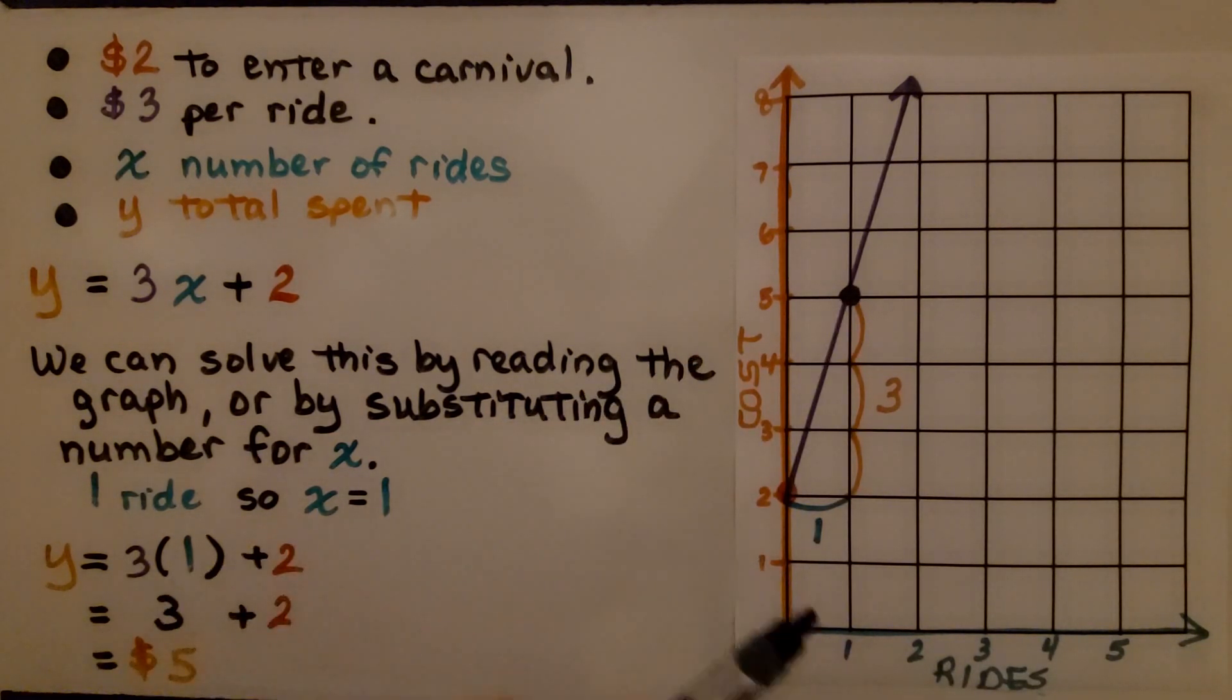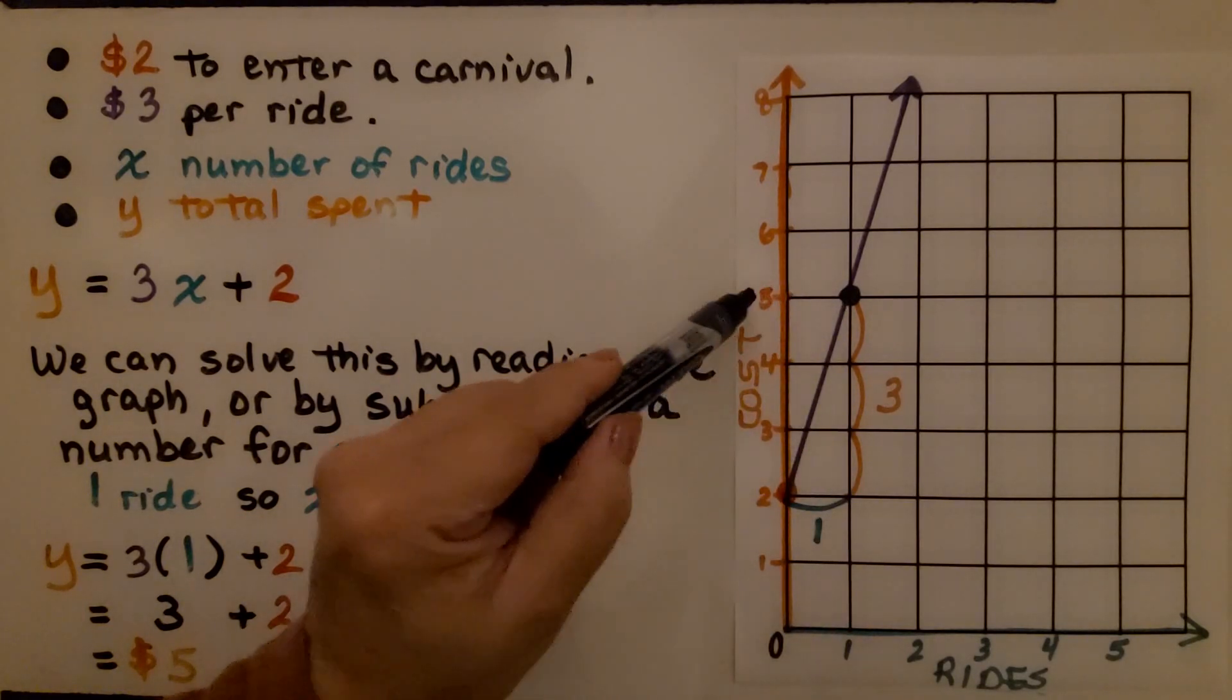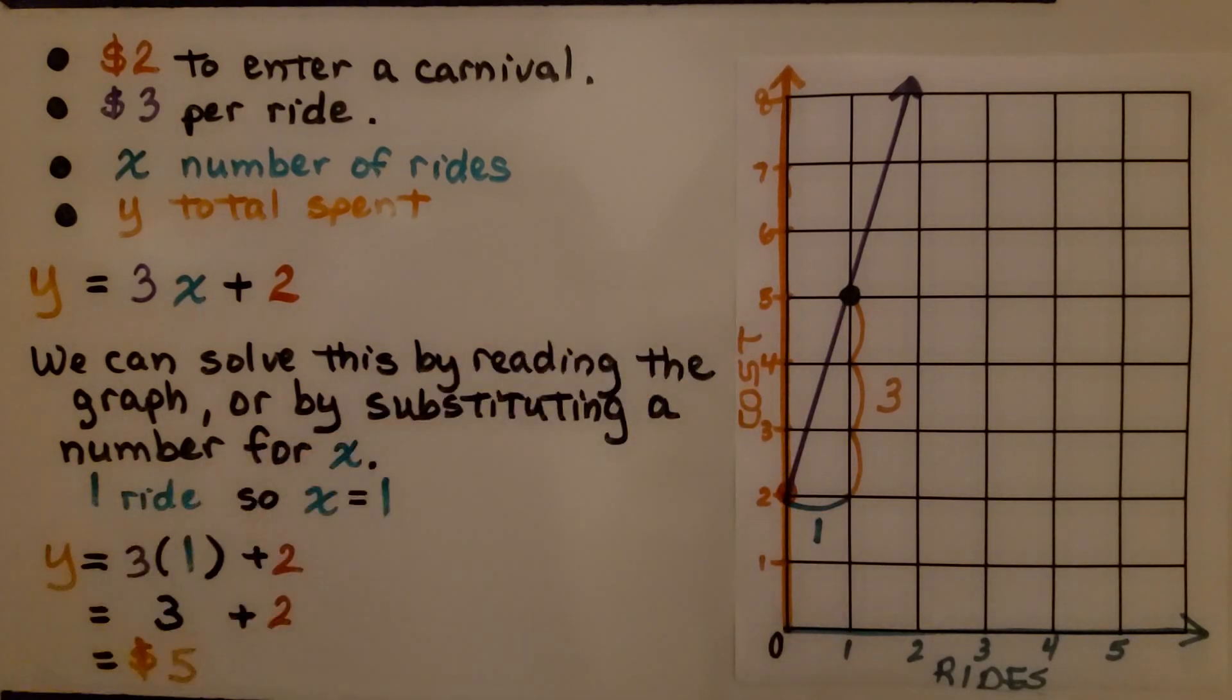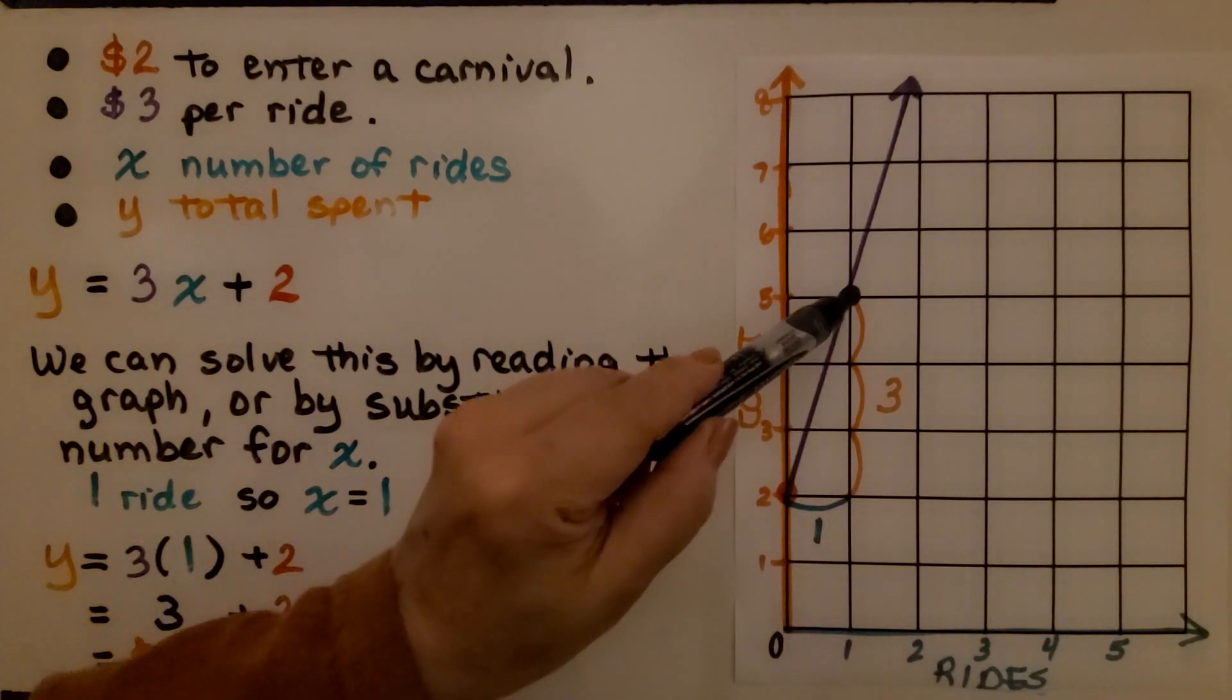That means if there is one ride, it will cost $5. Y equals 3 times 1 plus 2, substituting the 1 for x. That means we have 3 plus 2. That means y equals $5. So by either substituting the amount for x into the equation, or by graphing it, we can see one ride would be a total cost of $5.